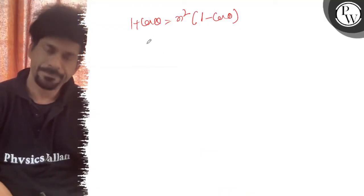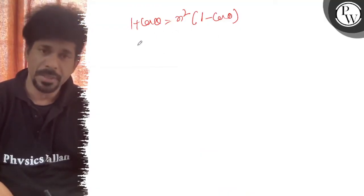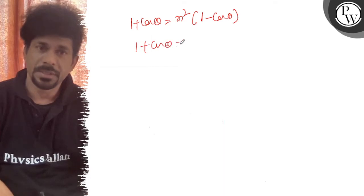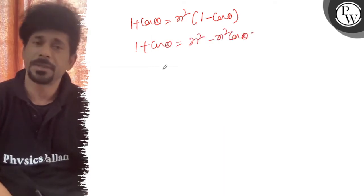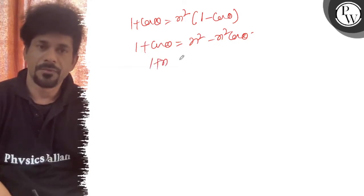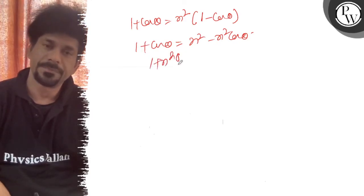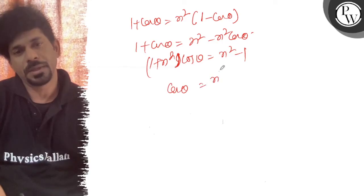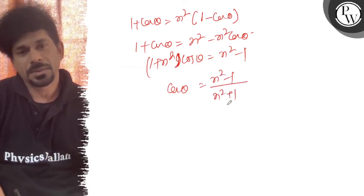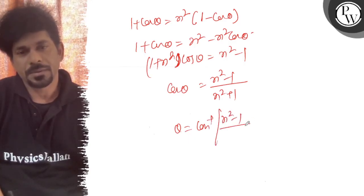Ab cross multiply kar lenge. Idhar se open kar lenge. 1 plus cos theta is equal to n square minus n square cos theta. Isko de le jao. 1 plus n square cos theta is equal to n square minus 1. To cos theta is equal to n square minus 1 upon n square plus 1. To theta is equal to cos inverse n square minus 1 upon n square plus 1.